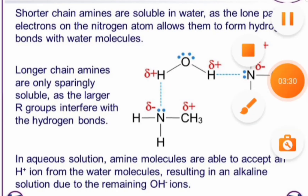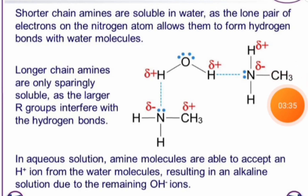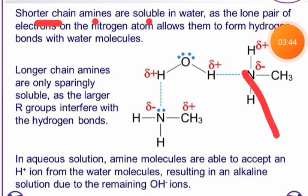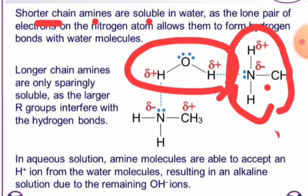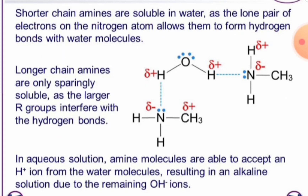Now let us see the physical properties of amines. The first property is solubility. Amines with shorter chains are easily soluble in water because they can form hydrogen bonds with water molecules. A primary amine with only one R group can create hydrogen bonds with water. Longer chain amines, however, are sparingly soluble in water because the larger R groups interfere with the formation of hydrogen bonds. So remember: amines are soluble in water due to hydrogen bond formation with water molecules.